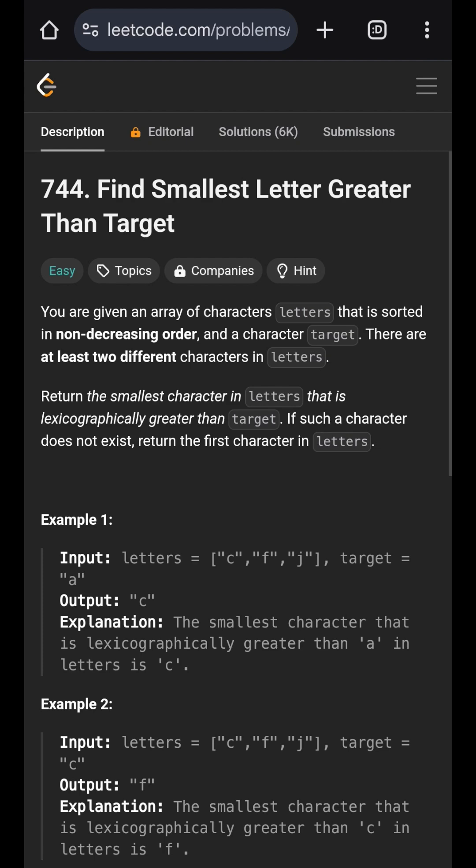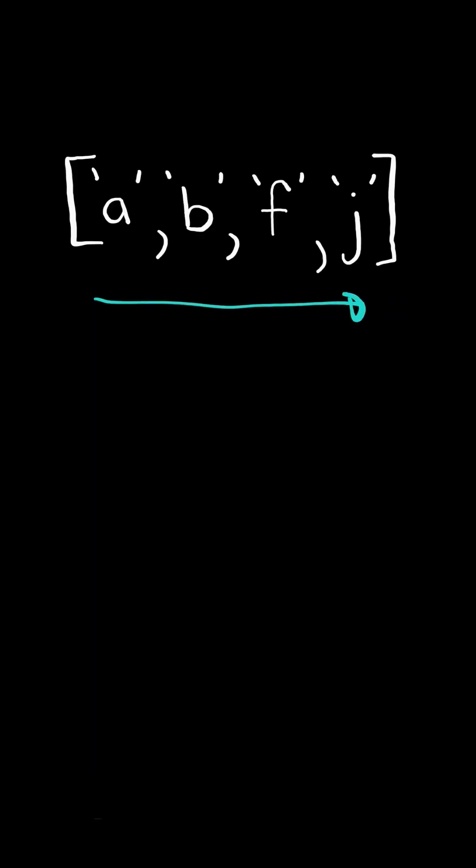Find smallest letter greater than target. Given a list of letters sorted in increasing order and a target letter, return the first character in the list that is greater than target.